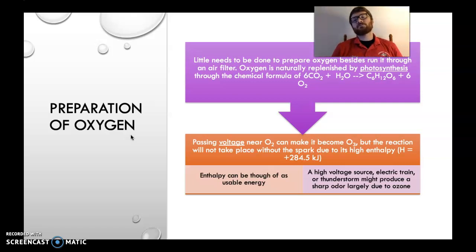6 CO2 plus 6 water, I missed a 6, becomes glucose, C6H12O6 and 6 oxygen. So plants naturally take carbon dioxide and water and make it into sunlight, or make it into glucose and energy, an energy formula and oxygen.